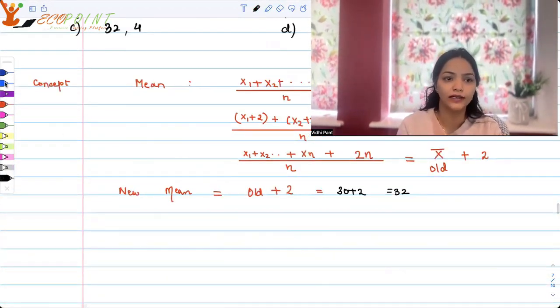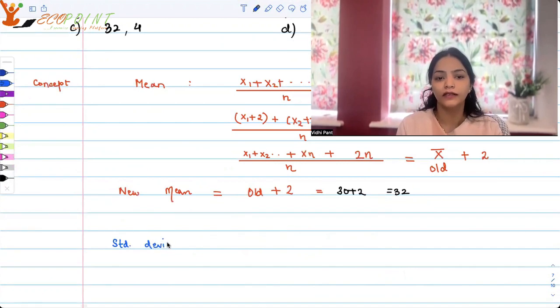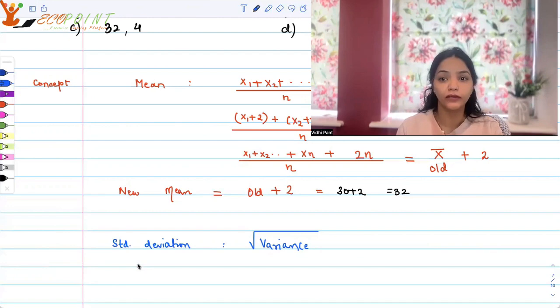But are we supposed to stop here? No, we're supposed to talk about the standard deviation. The other concept is of the standard deviation. Now the concept of standard deviation tells you it's basically the square root of variance. It tells you dispersion. Now one of the properties of standard deviation is that it is independent of change of origin.